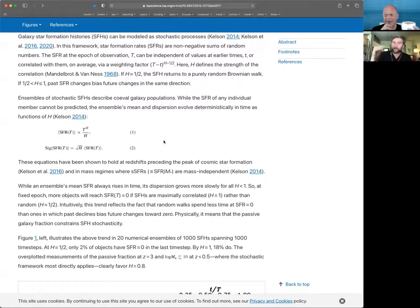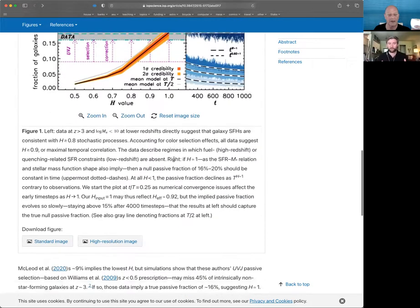Equation two predicts the dispersion—how far on average a galaxy will lie away from the mean. It's the square root of H times the mean, and this is where the whole paper comes in. If H is less than one, the dispersion in star formation rates is always growing slower than the mean. Since the mean is rising, you're always getting things farther from zero on average. The special case is when H equals one, where the dispersion grows at exactly the same rate as the mean, so there's always the same fraction of objects one sigma or two sigma away at zero. This is where the passive fraction comes in.